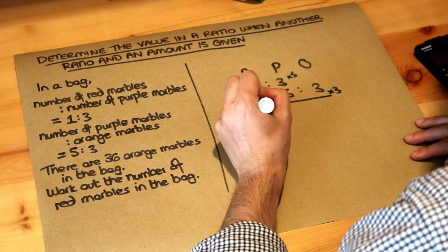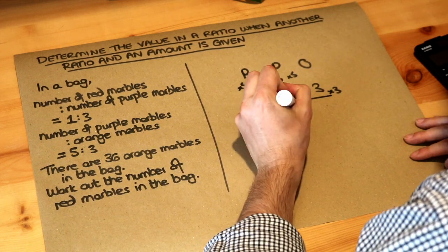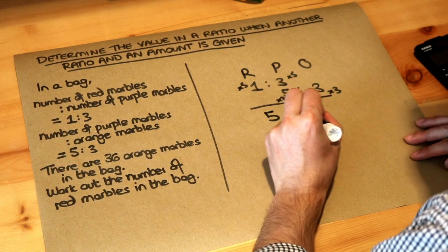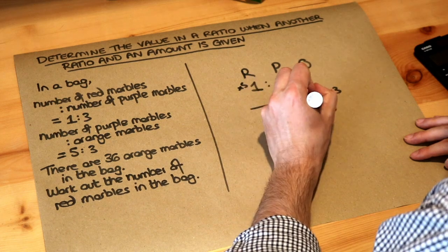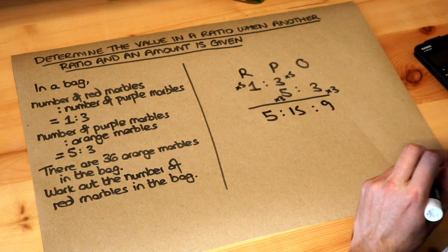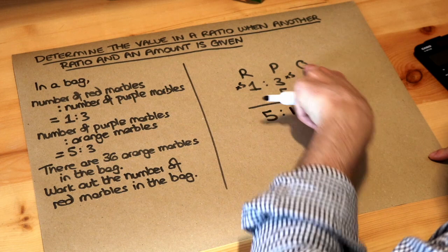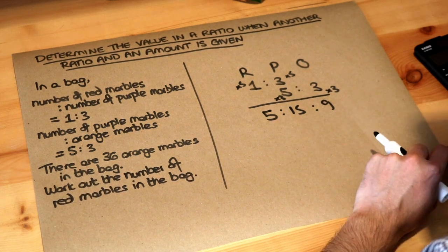So one times five is five. Three times five is 15. Five times three is 15 so it's consistent and three times three is nine and that is the combined ratio. So the ratio of red to purple to orange is five to 15 to nine.